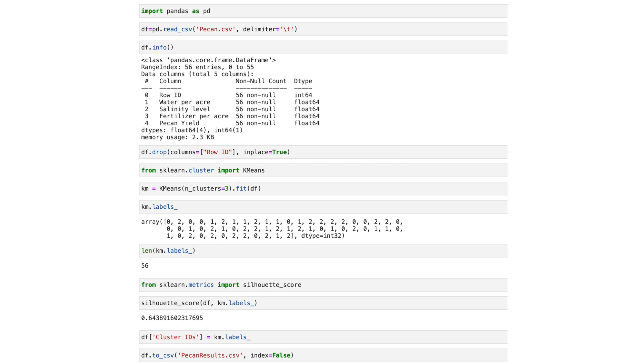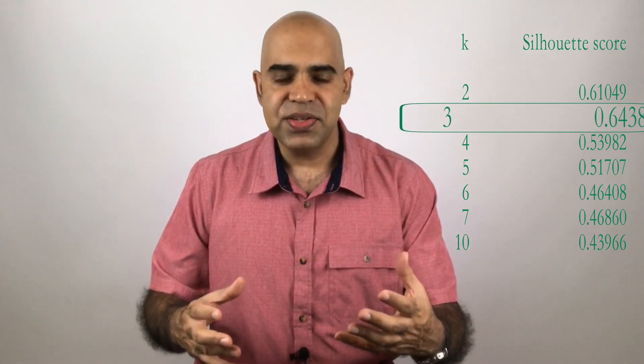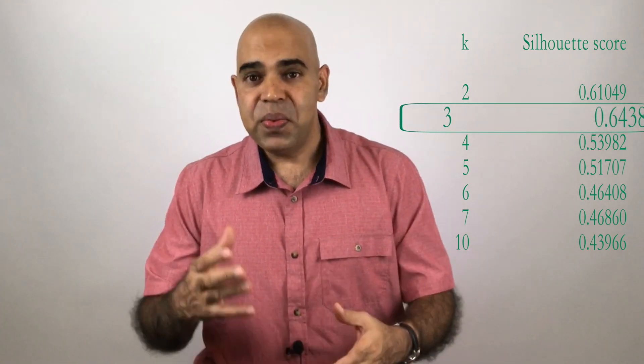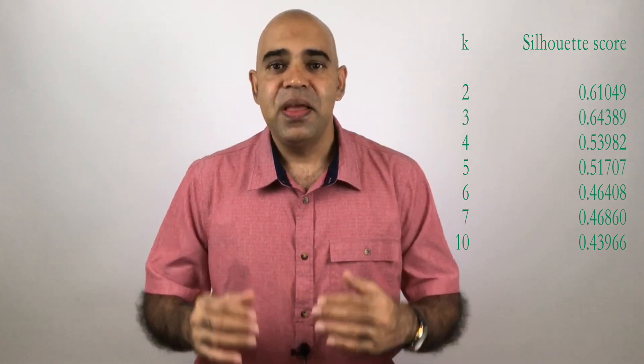Here is the code we have written today. I will provide a link in the description containing the pecan data and the program. In this video we observed that the clustering outcome with three clusters has the highest silhouette score. With a larger k the silhouette score dropped. For another dataset you might observe a similar trend, or a different one — some might have zigzags before dropping with a larger number of clusters. There are many other mechanisms to evaluate clusters.